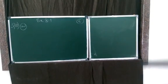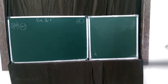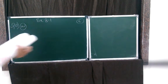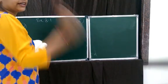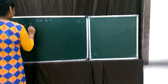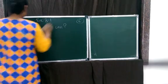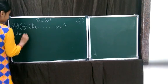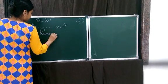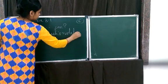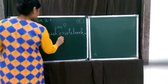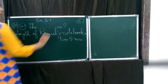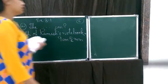Yesterday, that is Saturday. Now we are starting with question number 10. A - it is divided into two parts. The length of Ramesh's notebook is 9 cm 5 mm. What will be the length in cm? That means the length is given in cm and mm, and we have to convert it into cm only. So, whatever is given, that we are going to write. Notebook is 9 cm 5 mm, and we have to convert totally this into cm.